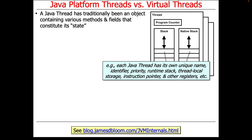Traditionally, a Java thread has been an object that contains a bunch of methods and some internal fields that constitute its state. Some of the state you see in a Java thread would be the name of the thread, the identifier — which is not the same as the name; the name is a string, the identifier is a number — the priority, whether it's high priority or low priority. There's also the runtime stack used to keep track of activation records, any thread-local storage, instruction pointers, and other registers used to execute the thread on a processor or processor core.